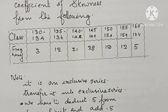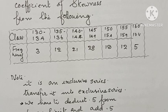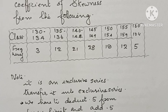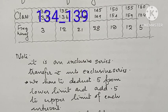To transfer it into exclusive series, we have to deduct 0.5 from the lower limit and add 0.5 to the upper limit of each class.